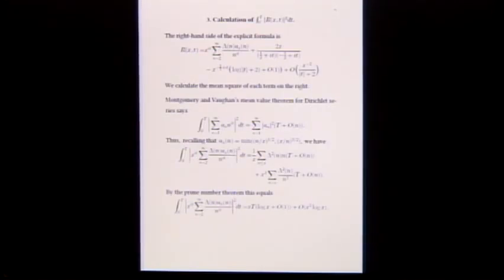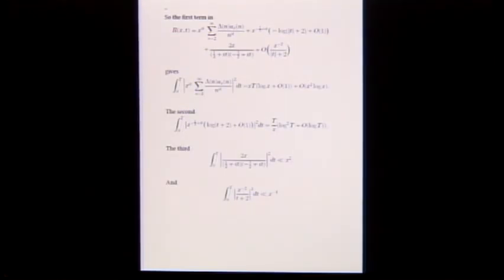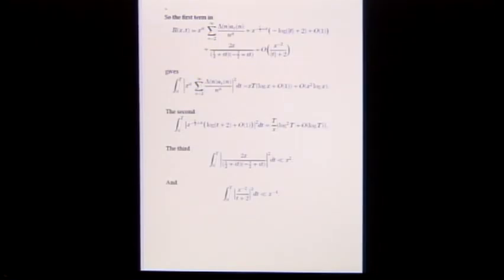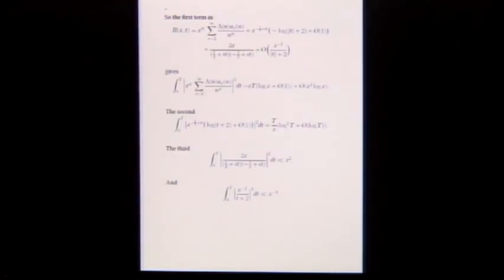The mean square of the pole term is x squared times 4 times the integral of the mean square of the denominator, giving big O of x squared. The trivial term's mean square is even smaller. The mean square of the zeta prime over zeta term gives a 1 over x times essentially log squared t, so that's T log squared T plus big O(T log T).